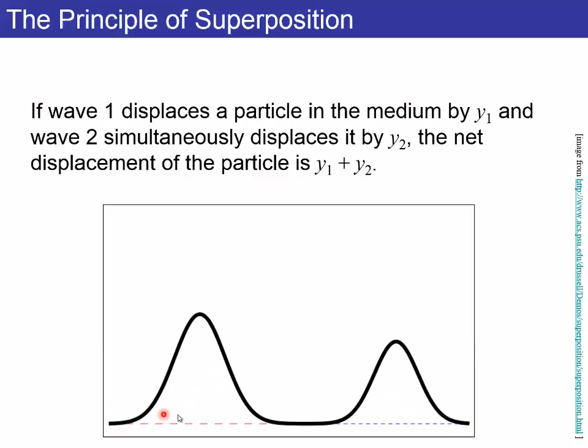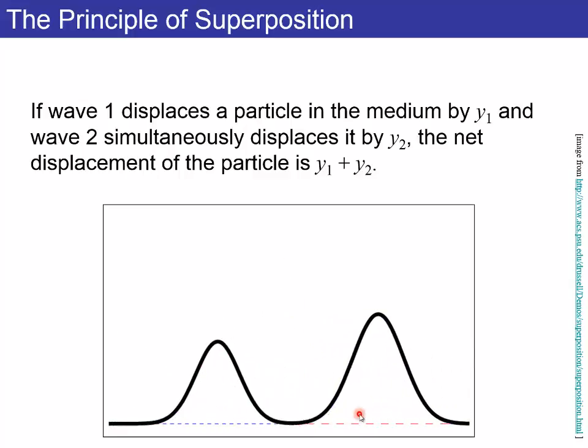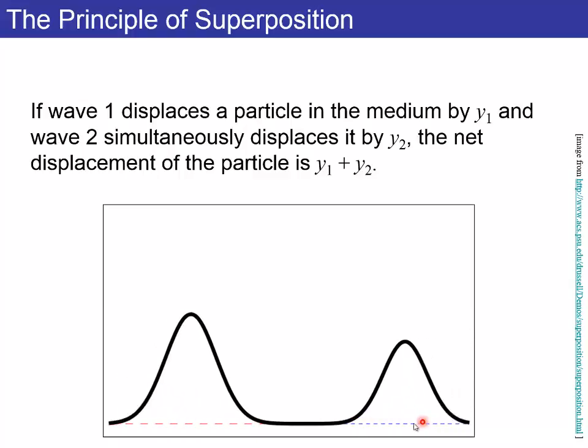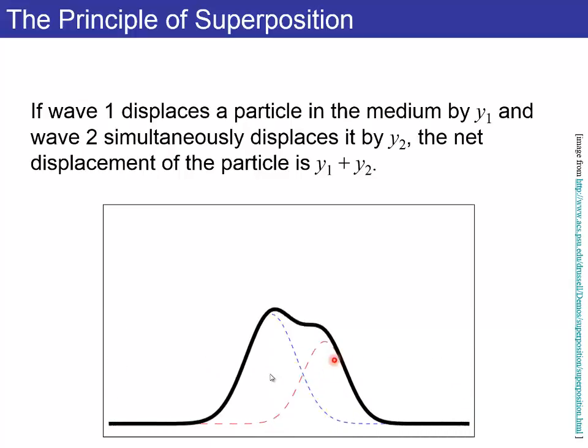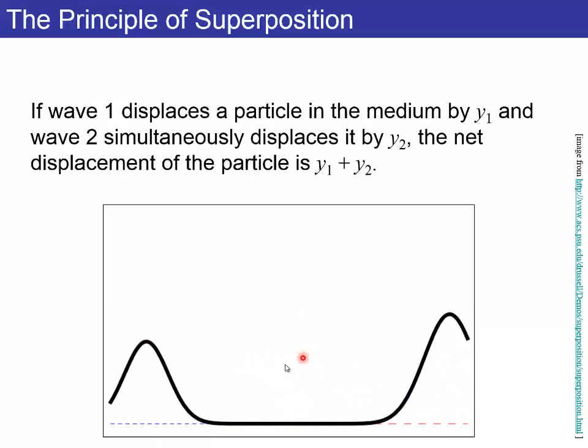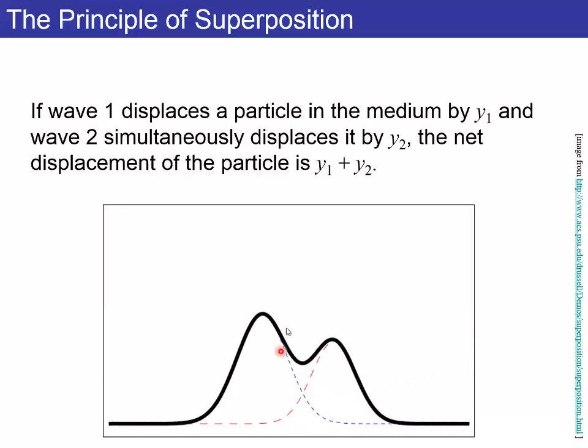If you've got this red curve Y1, pulse going from left to right, and add it to this blue curve Y2, pulse going from right to left, then when they're not on each other, you just see the pulses. When they overlap, the total pulse is just the sum of the two.